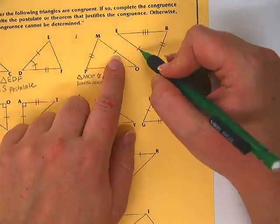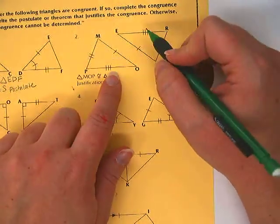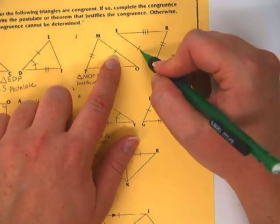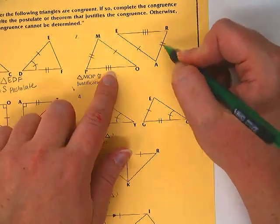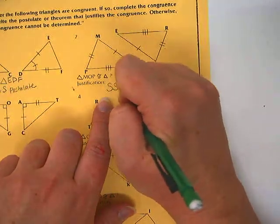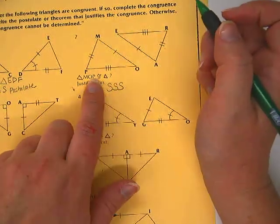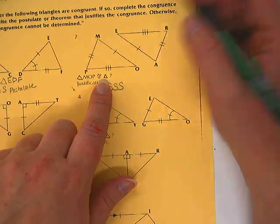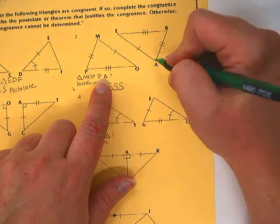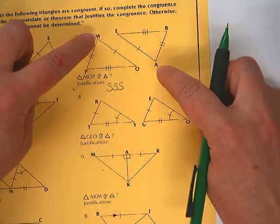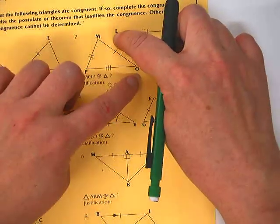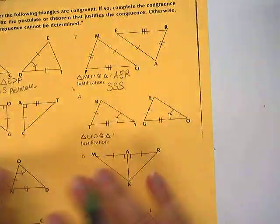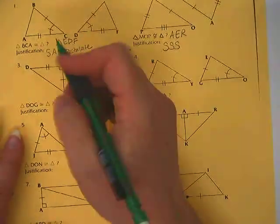Okay, the next one. We have a side congruent to a side, I keep saying angle when I mean side. Side congruent to a side, side congruent to a side, side congruent to a side. So the reason those are congruent is because of side, side, side. And the congruence statement is MOP congruent to AER because these go together, these go together, these go together. So we have to pay careful attention to that order.